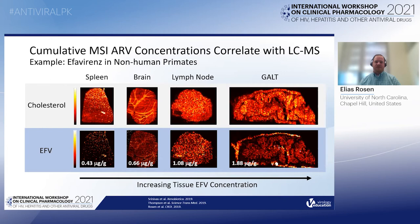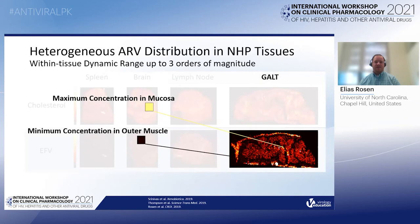An example application of these techniques is the quantification of efavirenz in a series of reservoir tissues in non-human primates. An endogenous ion, cholesterol, is shown to delineate the tissue morphology, as well as accompanying efavirenz response in the spleen, brain, lymph node, and GALT. These images are arranged in order of increasing cumulative efavirenz concentrations, which correlate well to trends measured by LC-MS-MS, where there's an increase from the spleen and brain to GALT. Additionally, MSI reveals significant heterogeneity — for example, in the ilium.